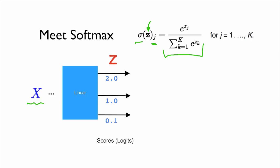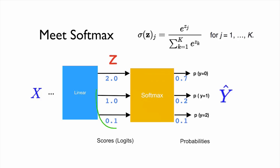For a given input x, we do some linear operations and it produces three numbers called scores or logits. Because it's linear, they can be any numbers — for example, 2.0, 1.0, and 0.1. If we apply softmax to these logits, we get nice probabilities for each index. For example, 0.7 is the probability that y equals 0, and so on. Because each value is a probability, if you sum all of them, it equals 1.